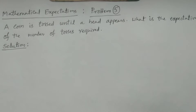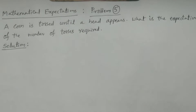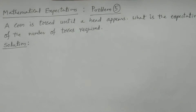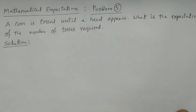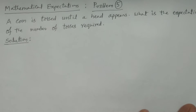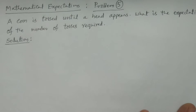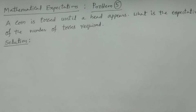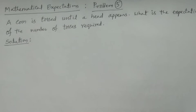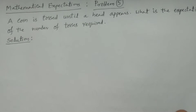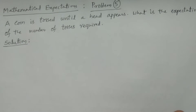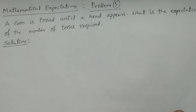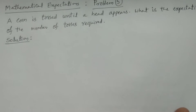This is a generalization. We cannot specify in which particular toss — first, second, third, or fourth — we will get a head. We have to calculate the probability and find what is the expectation of the number of tosses required. So I will formulate the problem first.